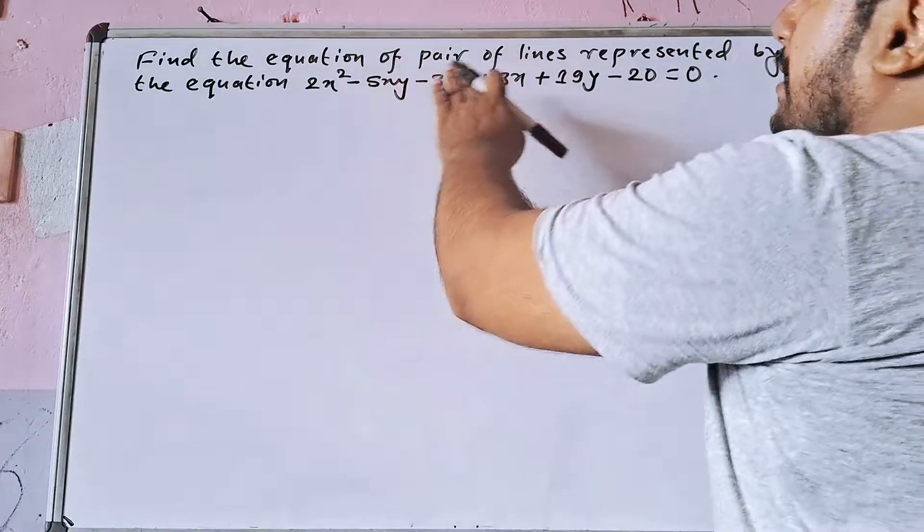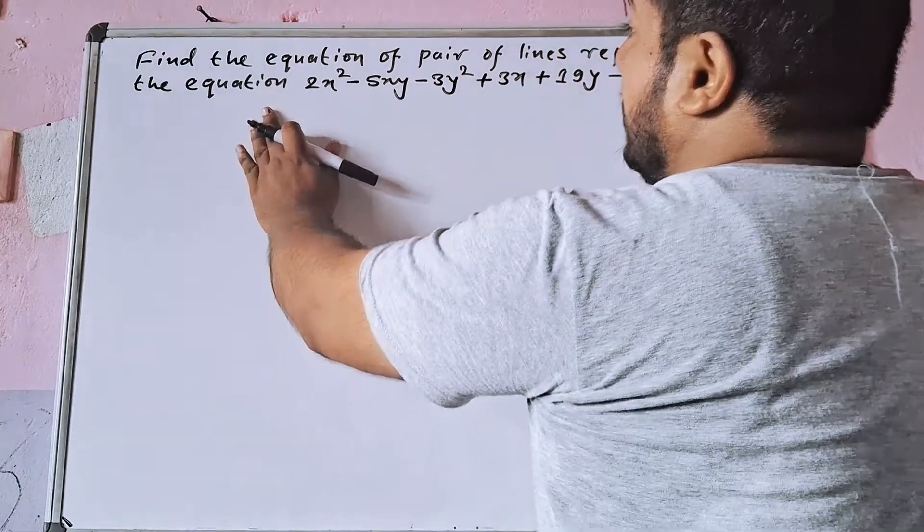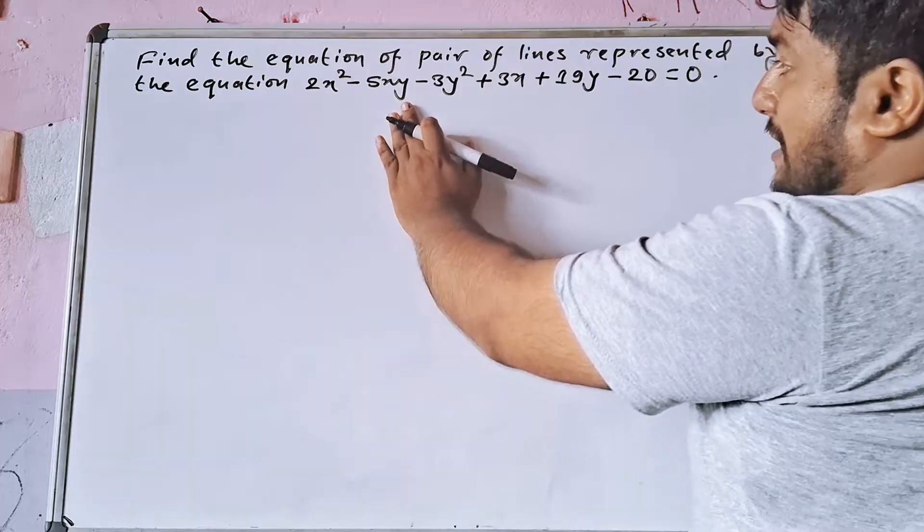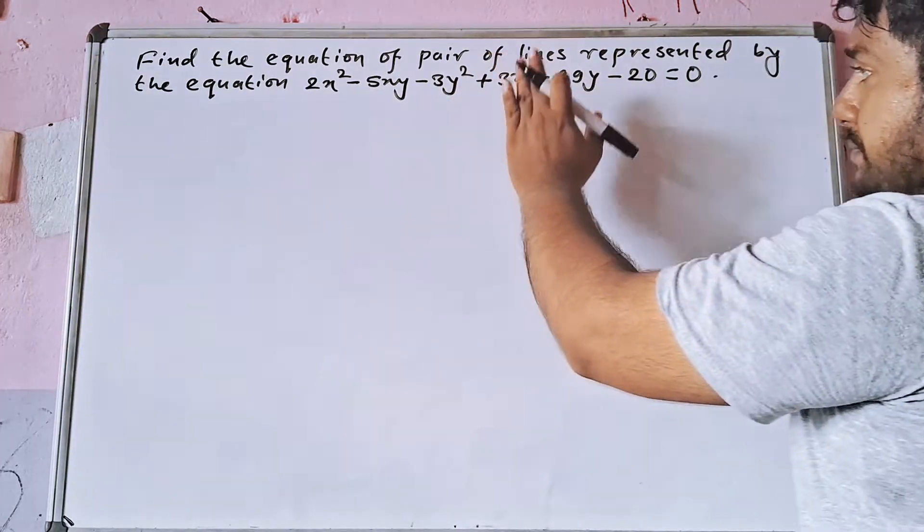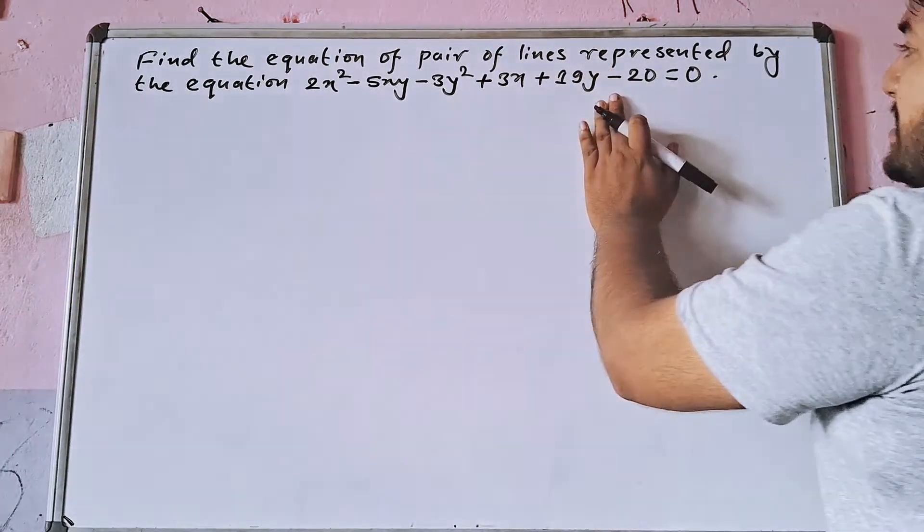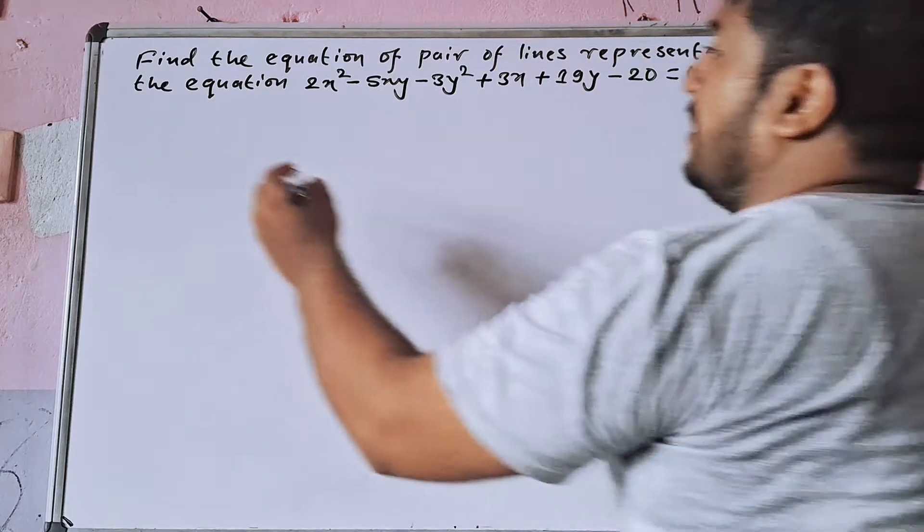Find the equation of the pair of lines represented by the equation 2x squared minus 5xy minus 3y squared plus 3x plus 19y minus 20 equal to 0.